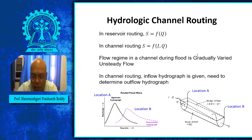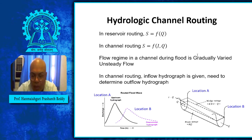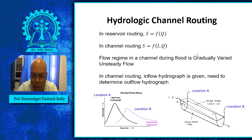Unsteady flow can happen in an open channel during flood time, or if we increase or decrease the flow in the channel. In a channel, flood routing is carried out mainly during flood time, so it is an unsteady flow because flow is either increasing or decreasing with time. Flow depth along a channel is also not constant because of either backwater effect or slope effect — together, it is a gradually varied unsteady flow.